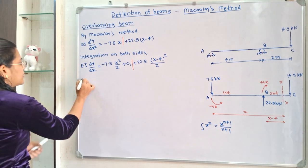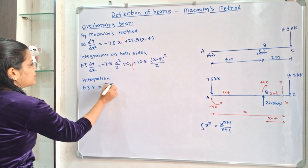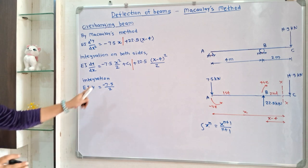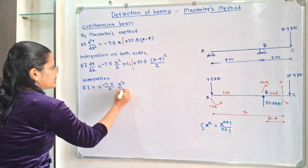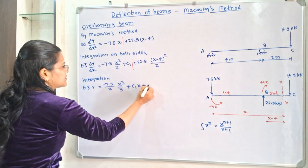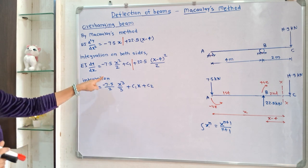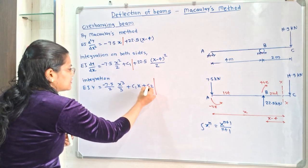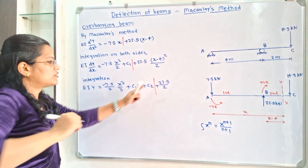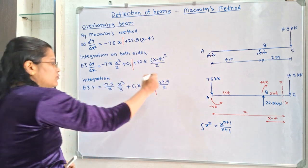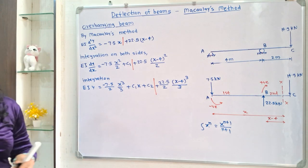Applying the second integration on both sides: EI·y equals minus 7.5/2 times x³/3, plus C1·x plus C2 for the first part — where C2 is the constant of integration for the second integration. For the second part: plus 22.5/2 times (x minus 4)³/3.